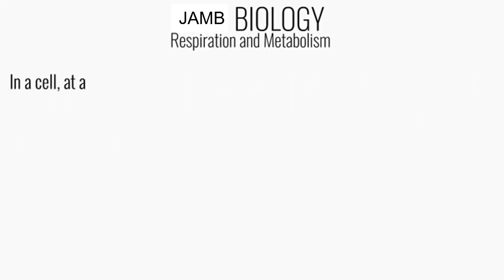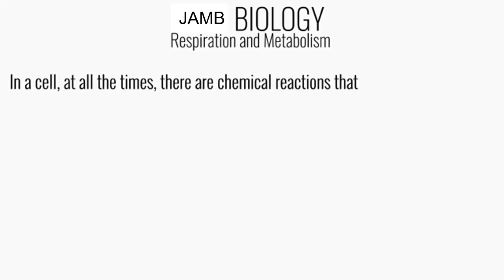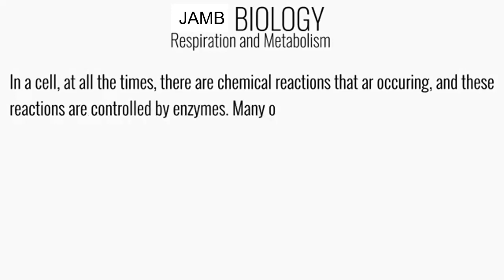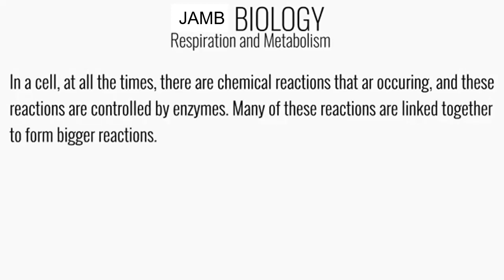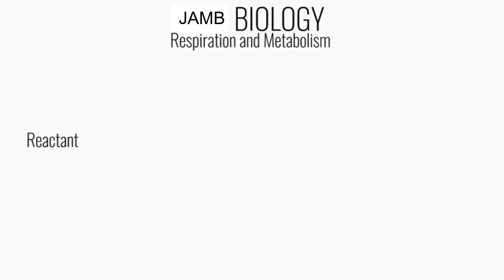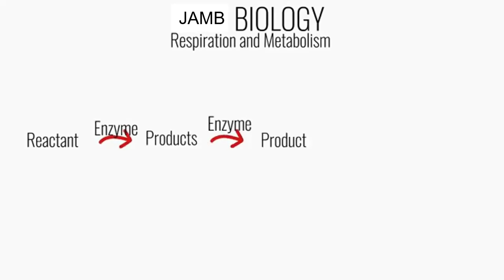In a cell at all times there are chemical reactions occurring, and these reactions are controlled by enzymes. Many of these reactions are linked together to form bigger reactions. Enzymes catalyze reactions to form products, and then these products join up to form other products with the help of other enzymes, and this continues in this way.